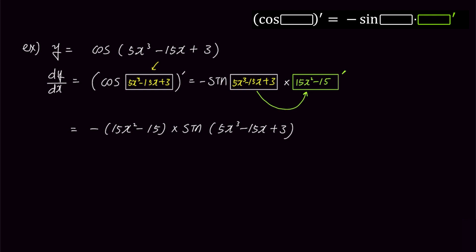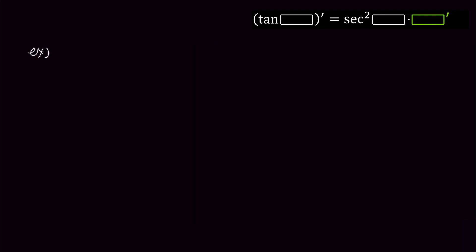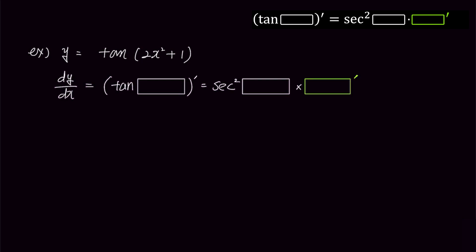Next, let's solve an example involving tangent. Let's differentiate the simple example y equals tangent of 2x squared plus 1. We'll use the formula shown above. The derivative of tangent is secant squared, and as we've done before, we need to find the box and multiply by the box prime. We'll put 2x squared plus 1 into the left box and also into the right box. Now we place the derivative of the box, which is 4x, into the box prime. The answer is 4x times secant squared of 2x squared plus 1.